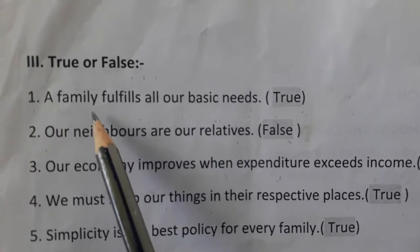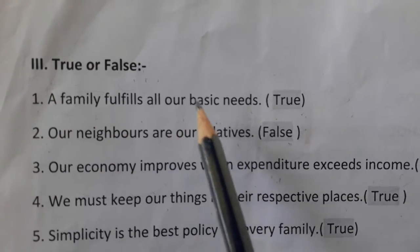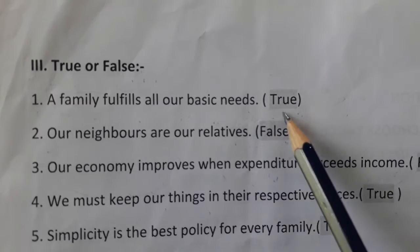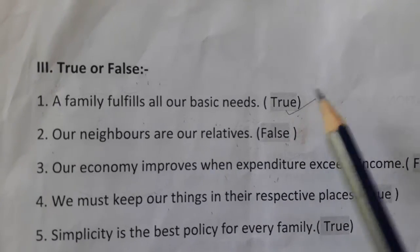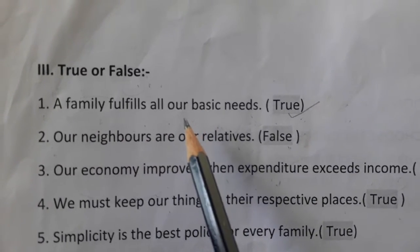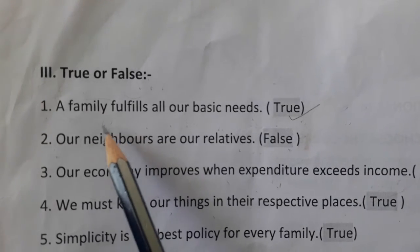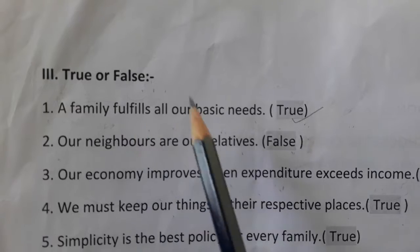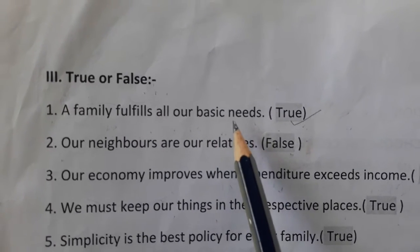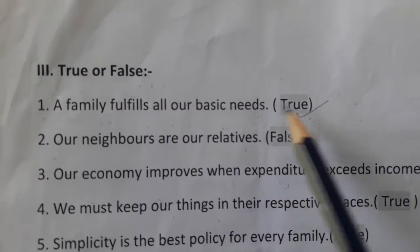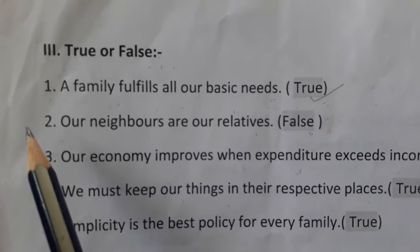First one: your family fulfills all our basic needs. Is it true or false? The answer is true. Because our family fulfills all our needs. If you want anything, you would ask your parents, and they will only fulfill your needs and wants. So your family fulfills all our basic needs — that is true.